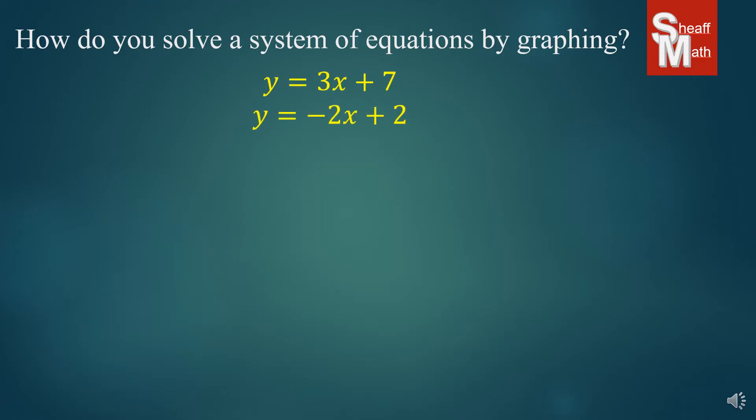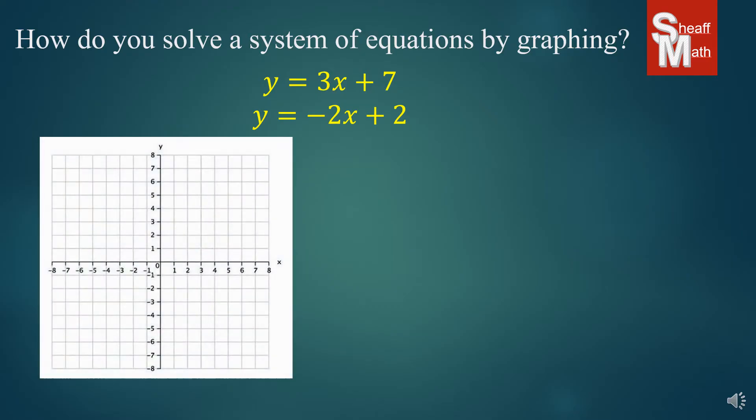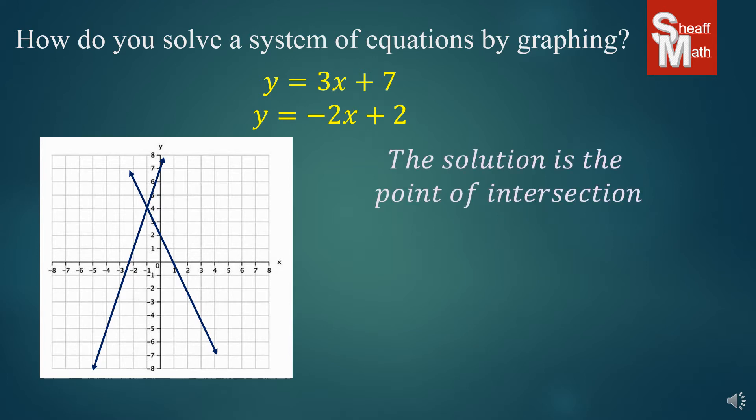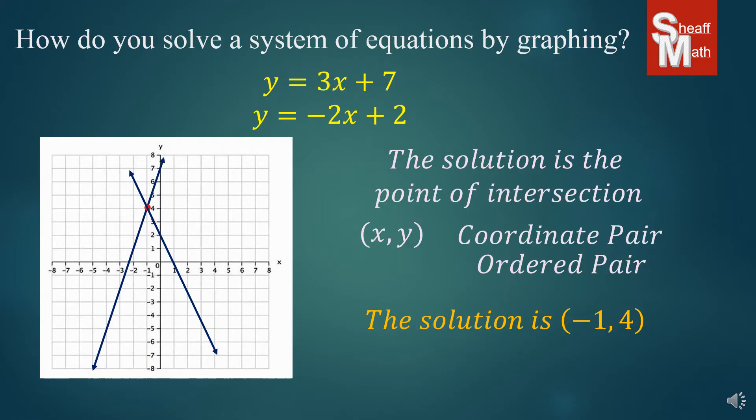Well, you're given two equations, which is a system of equations, two equations working together. Sometimes there's more equations but we're just going to be working on two. And what you're going to do is you're going to graph these two lines. And what we're doing is we're trying to find the solution, and it's the intersection or the point of intersection where these two lines cross. And ours happens to be right there. And so this is in the form of an xy coordinate pair, also known as an ordered pair. And so in this case our solution is negative 1, 4. So that's what a solution looks like in a graphed system of equations.